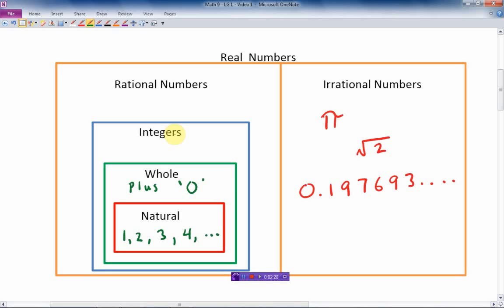Which then brings us to the third category of numbers called integers, which includes all the natural numbers—one, two, three, four, et cetera—plus zero, and also includes the negatives. So negative one, negative two, negative three, et cetera, all the way down to negative infinity. So the integers are the negatives and positives and zero.